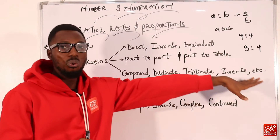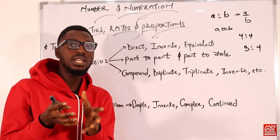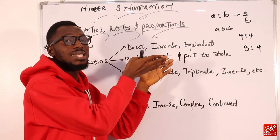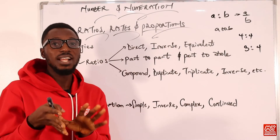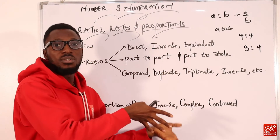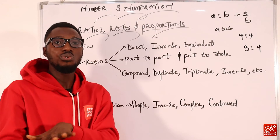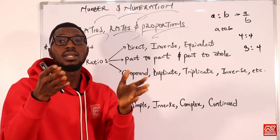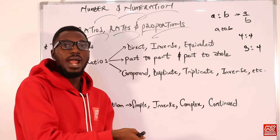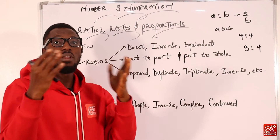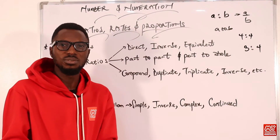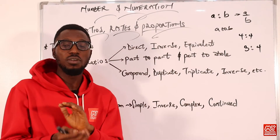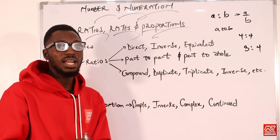When we say part-to-whole, we are comparing the whole population to a certain part of that population. For example, if there are 30 girls in a school with a total population of 300, we are comparing the number of girls to the total population of the school — 30 to 300.